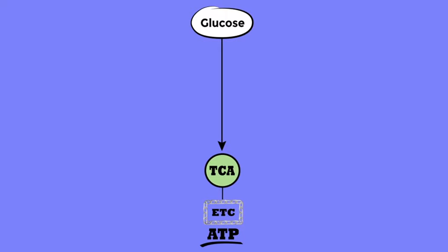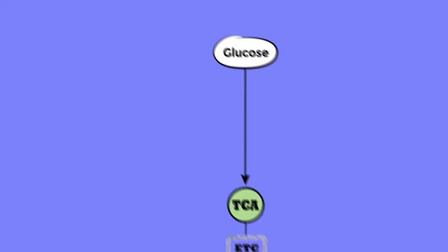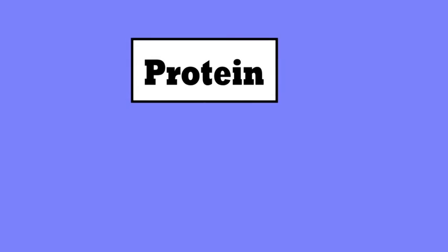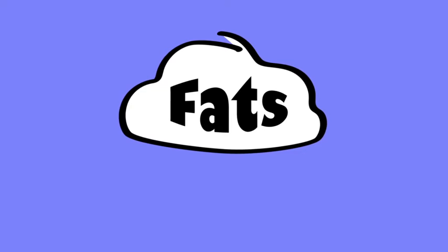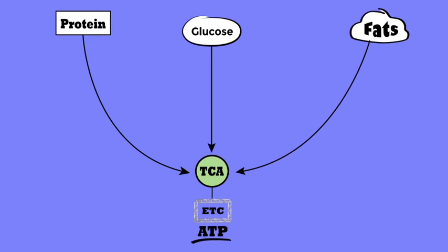But we know there are other food products we can use for energy as well. Some of those are protein, which can be converted to create energy, as well as fats. Within inborn errors of metabolism, a defect in any of these pathways can lead to a deficiency of ATP and that can lead to metabolic demand that cannot be met in a sick child.